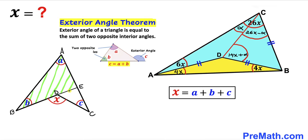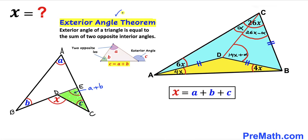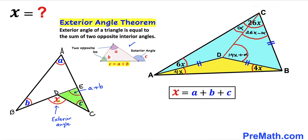Now focus on the smaller triangle CDE and apply the same exterior angle theorem. Angle X is the exterior angle, and the opposite interior angles include the result from before. So angle X equals the sum of all three interior angles A plus B plus C. That completes the proof.